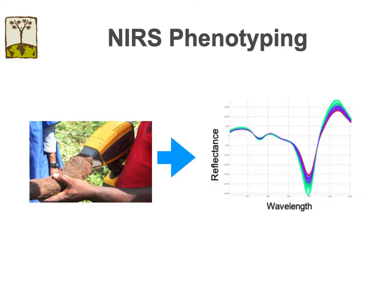Currently, portable NIRS devices are revolutionizing phenotyping. Spectra can be correlated with traits in the samples. The calibration of this trait-spectrum correlation can be performed directly in CassavaBase, and Nick will present more about this later in the workshop.